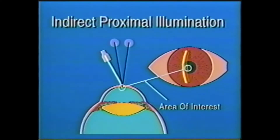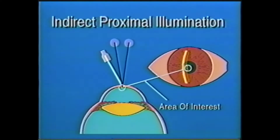Three, indirect proximal illumination. This maneuver highlights the object being evaluated at the side of the light beam, not directly where the light is focused, such as these KP or keratitic precipitates.